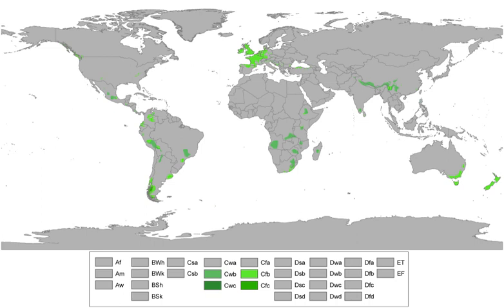Many oceanic climates have frequent cloudy or overcast conditions due to the near constant storms and lows tracking over or near them. The annual range of temperatures is smaller than typical climates at these latitudes due to the constant stable marine air masses that pass through oceanic climates, which lack both very warm and very cool fronts.